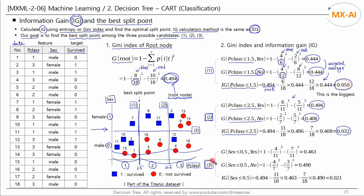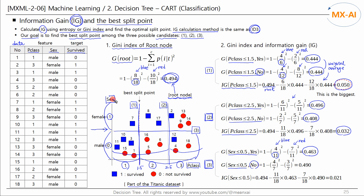Lastly, let's calculate the information gain for the third candidate, splitting on the SEX feature at 0.5. Data points with sex less than 0.5: a total of 11 pieces of data, 4 blues and 7 reds, giving a Gini index of 0.463. Data points with sex greater than 0.5 give a Gini index of 0.490. The information gain is 0.021.